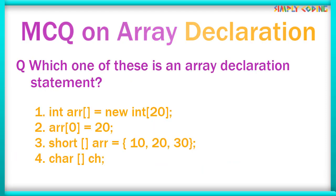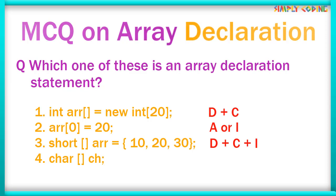In the next question, which one of them is an array declaration statement? The first one has array declaration plus array construction. The second one is an array assignment statement. The third one is declaration, construction, and initialization all in one. The last one is the one which has only array declaration, so that is the correct answer.